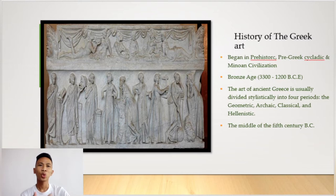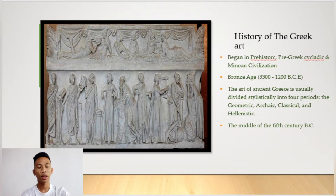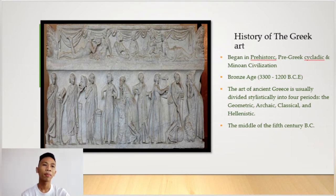The art of ancient Greece is usually divided statistically into four periods: the Geometric period, the Archaic period, the Classical period, and the Hellenistic period.